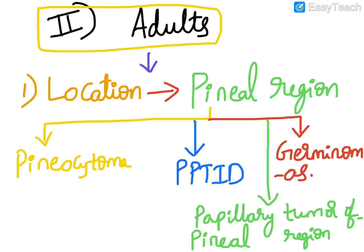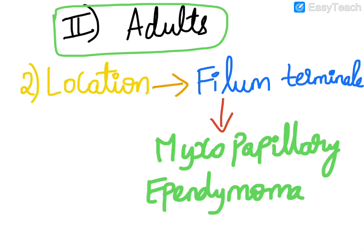In adults, taking the pineal region as the first location, we see certain CNS tumors arising: pineocytoma, pineal parenchymal tumor of intermediate differentiation (PPTID), germinomas, and papillary tumor of the pineal region.